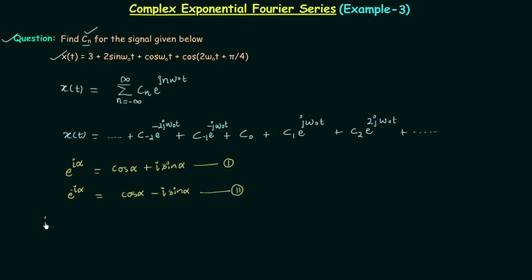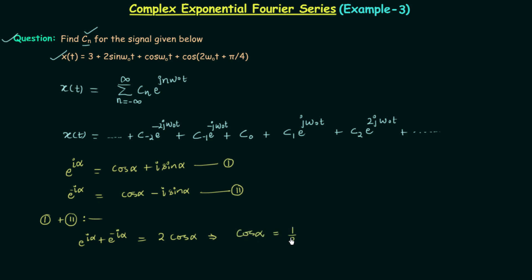Adding the first and second equations gives e raised to power j alpha plus e raised to power minus j alpha on the left-hand side, and the j sin alpha terms cancel, leaving twice of cos alpha. So we can write cos alpha is equal to 1 by 2 times e raised to power j alpha plus e raised to power minus j alpha.